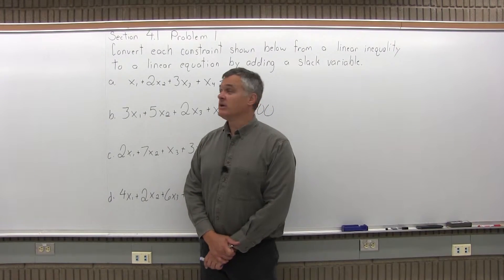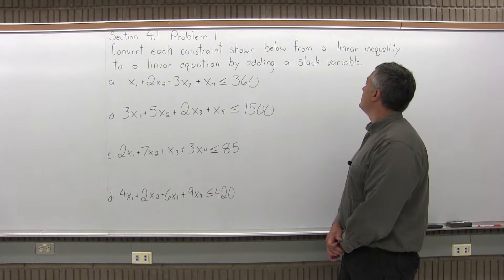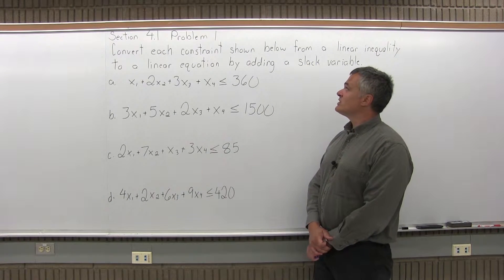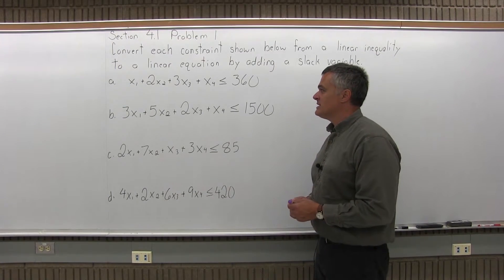This is Section 4.1, Problem 1, and it says convert each constraint shown below from a linear inequality to a linear equation by adding a slack variable. And this part's A, B, C, D.